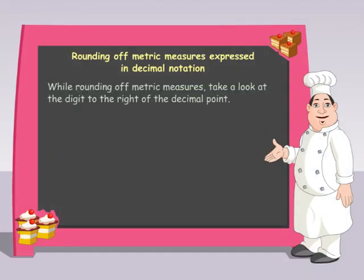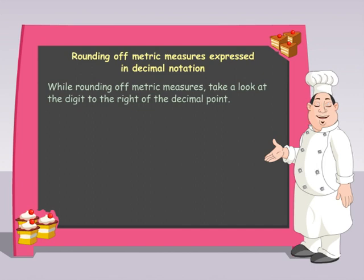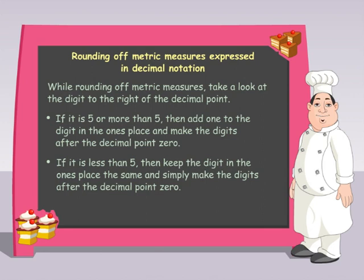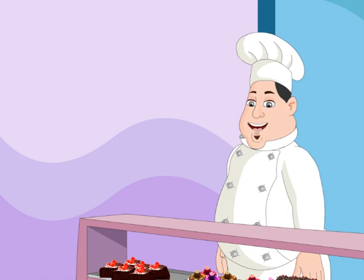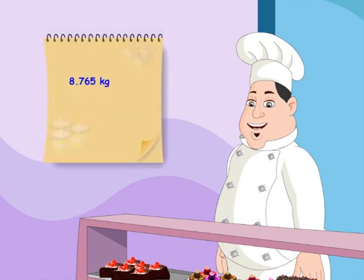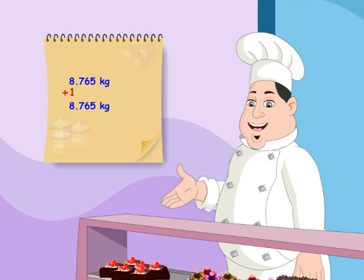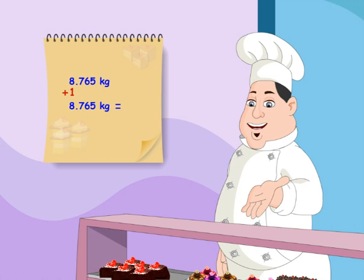In these cases, take a look at the digit to the right of the decimal point. If it's 5 or more than 5, then add 1 to the ones digit and make the digits after the decimal point 0. If it is less than 5, simply make the digits after the decimal point 0. Let us round off 8.765 kg to its nearest kg. Since 7 is greater than 5, we add 1 to the digit at the ones place. 8.765 kg becomes 9 kg.